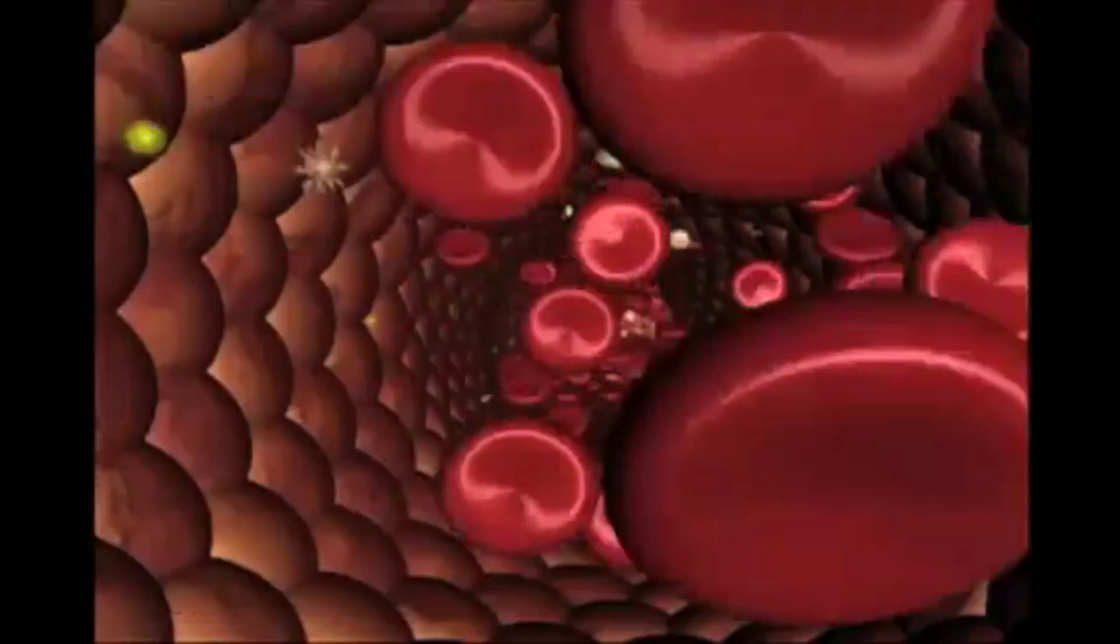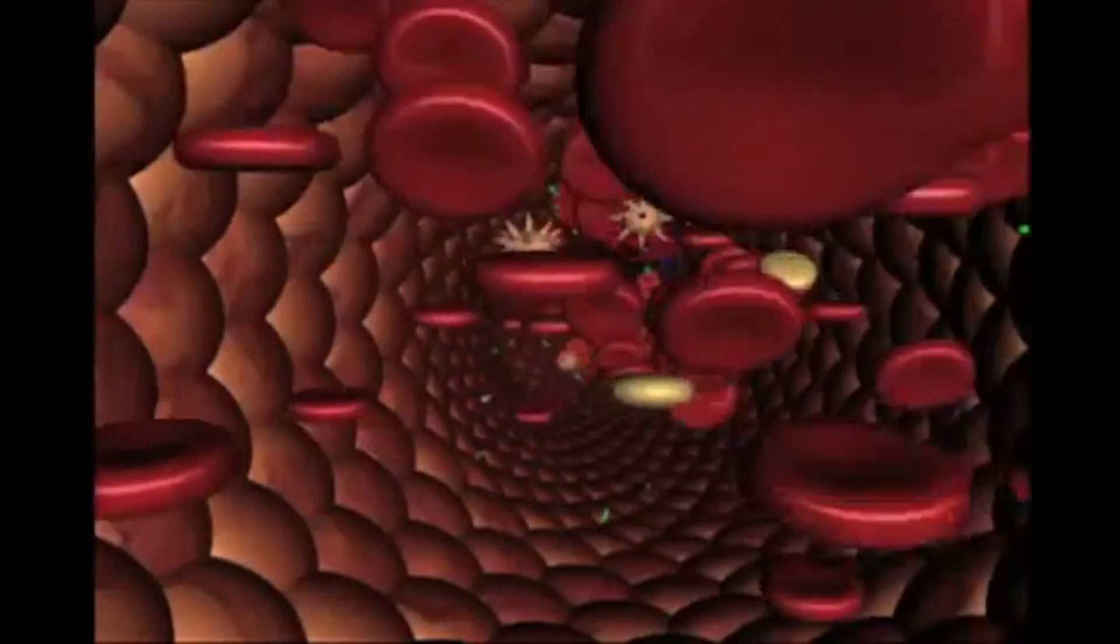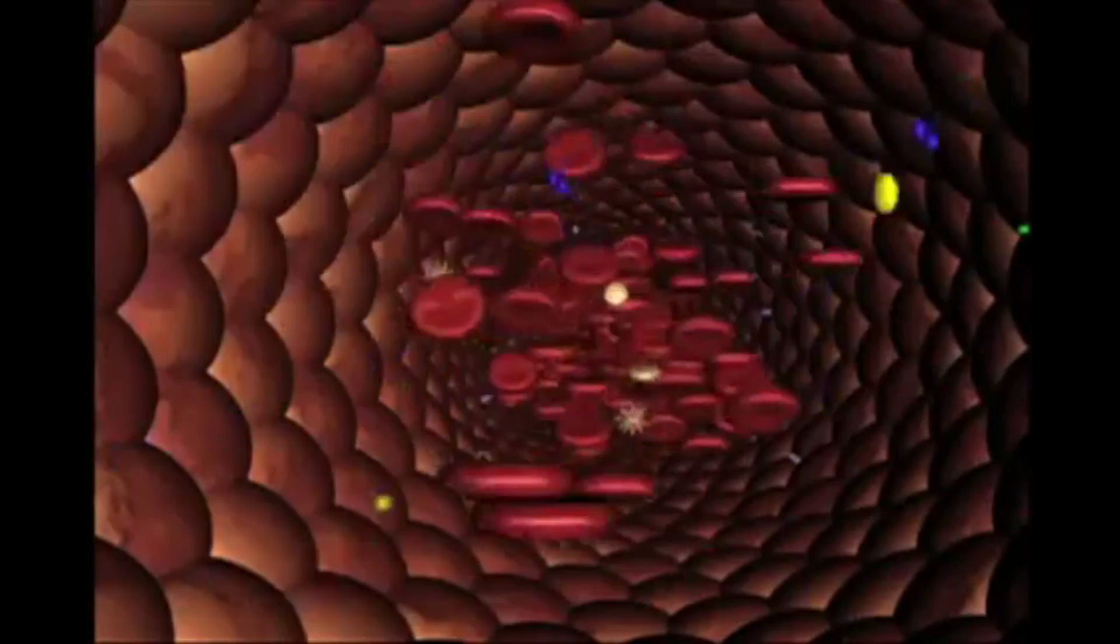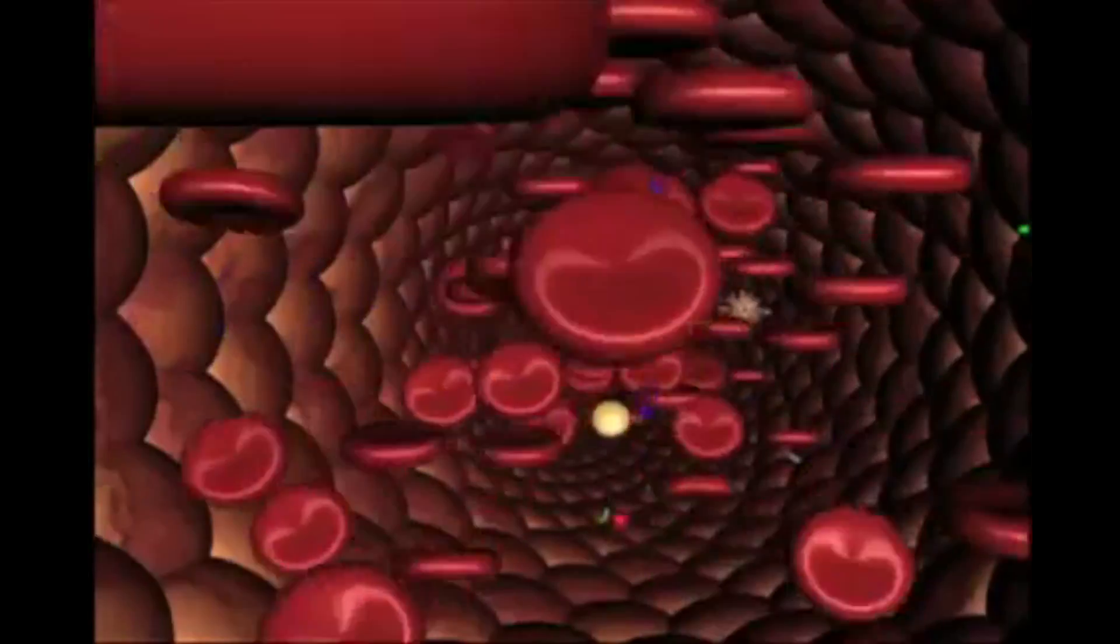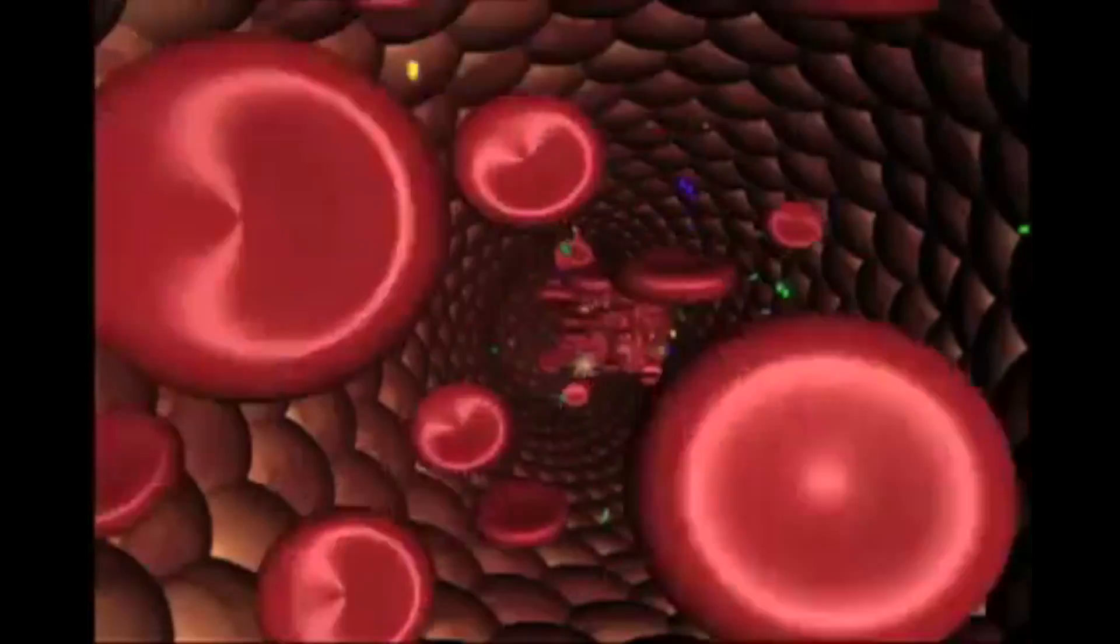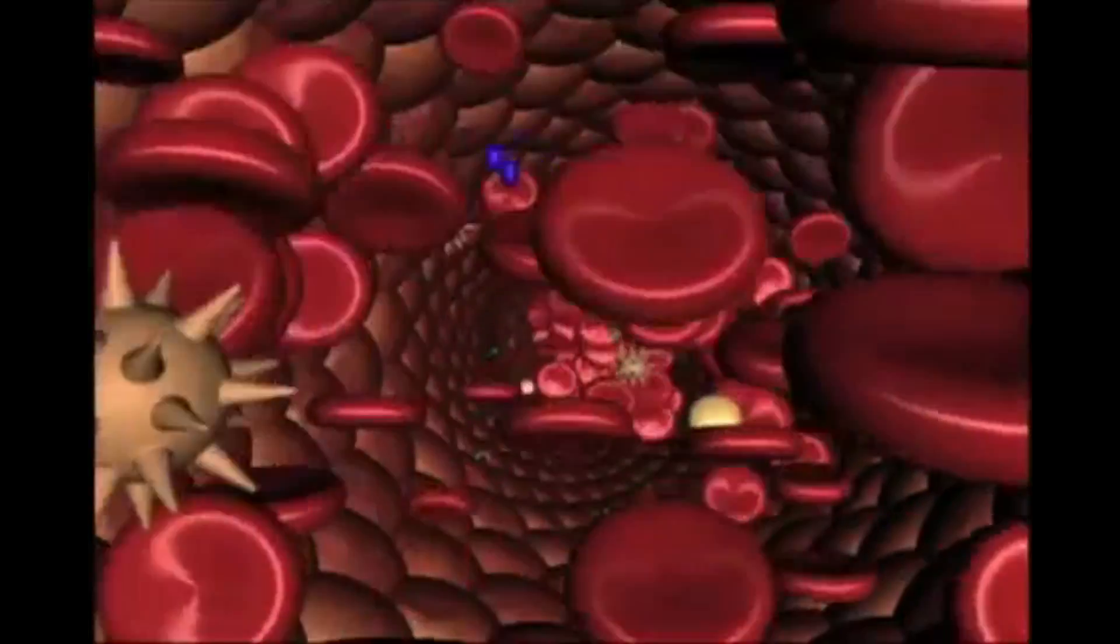The endothelial cells also provide tissue factor pathway inhibitor (TFPI), which attenuates the clotting process by binding to the tissue factor, factor VIIa, factor Xa product complex.